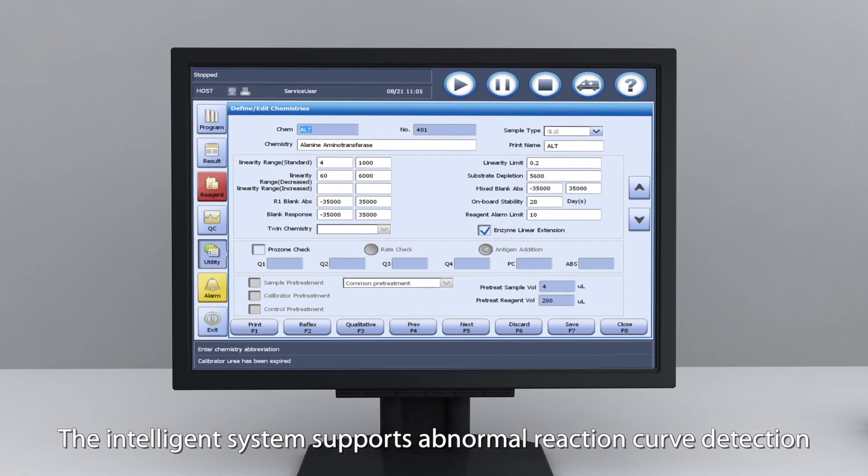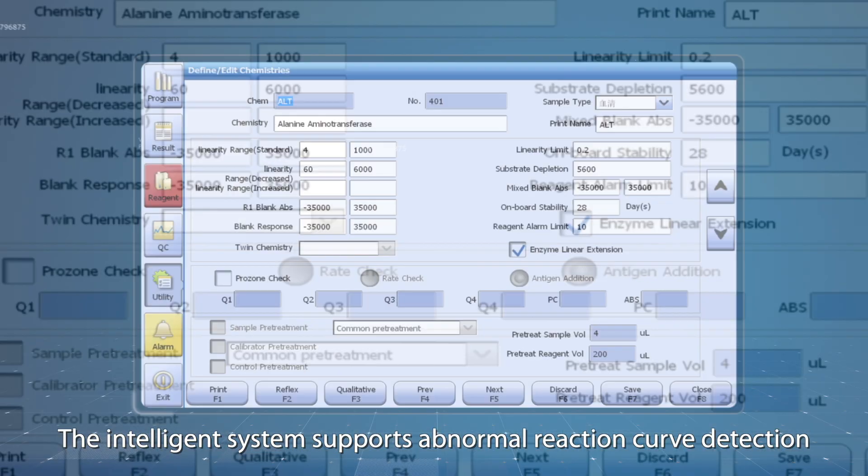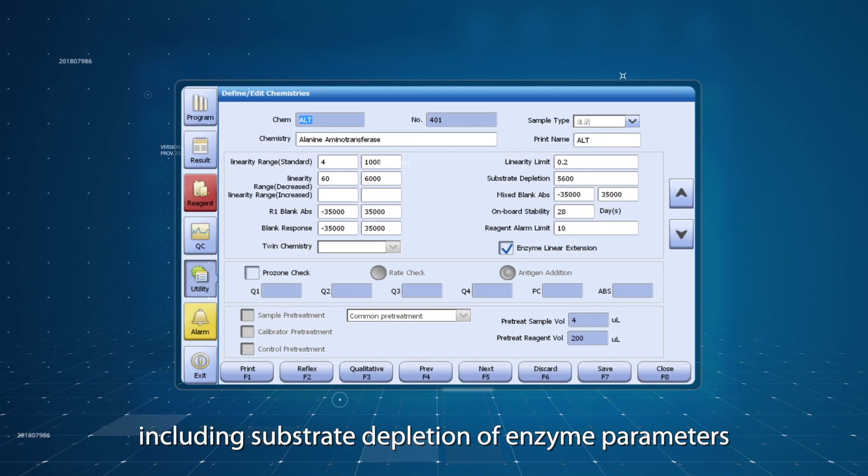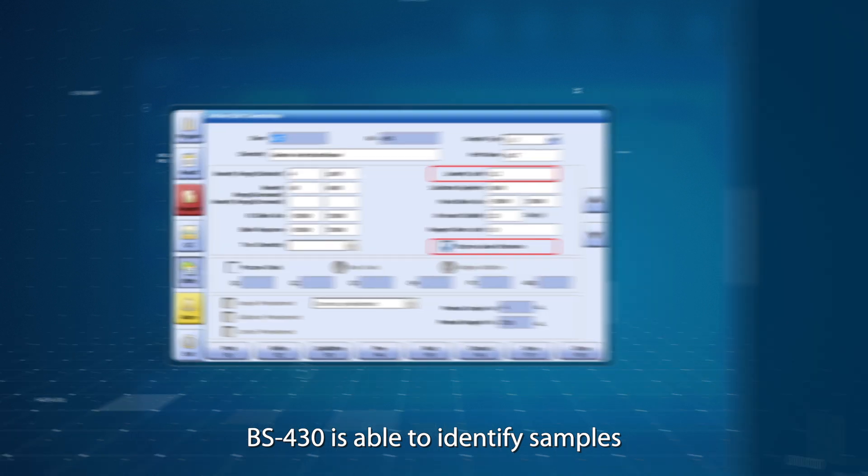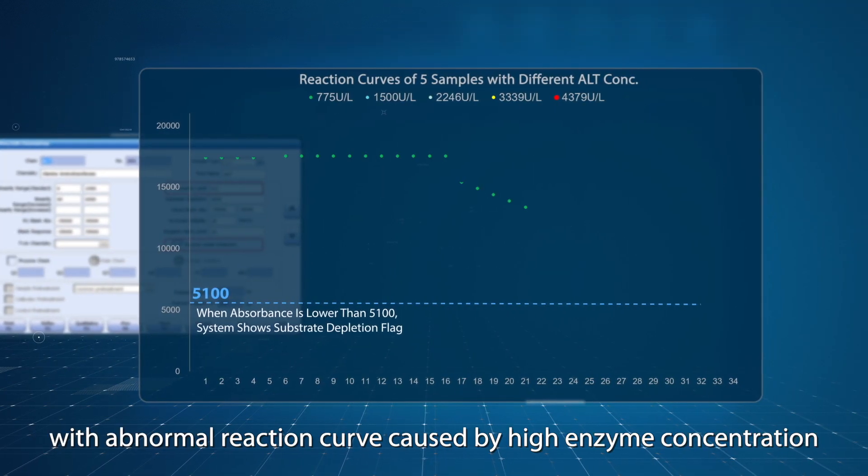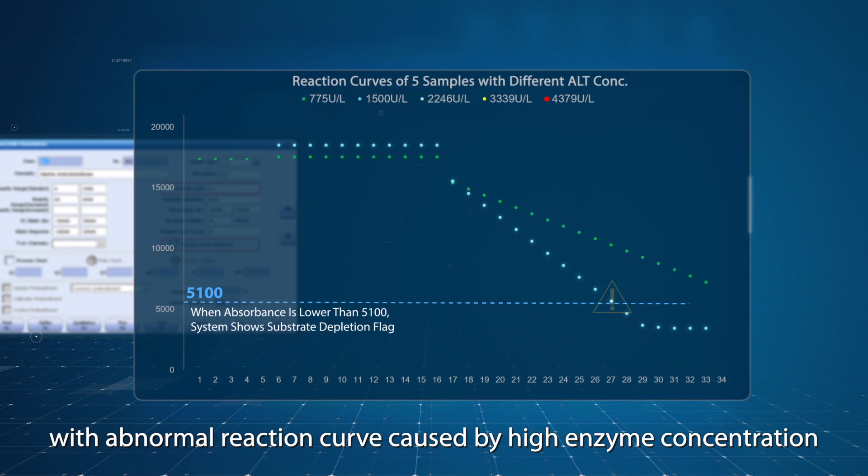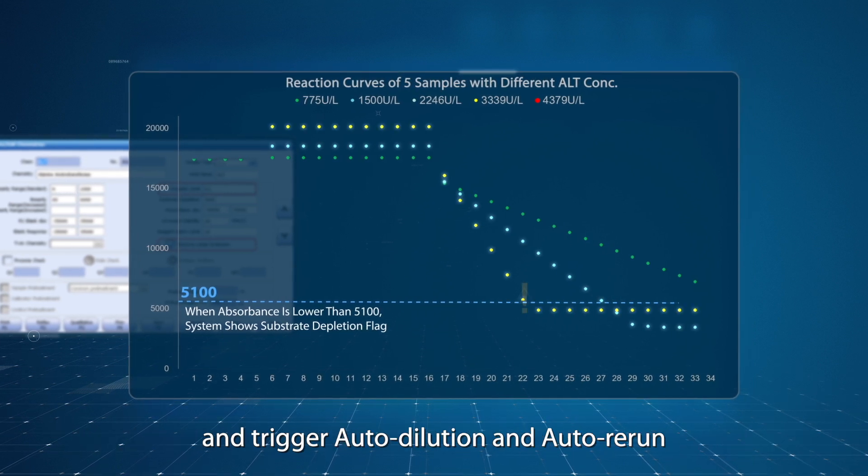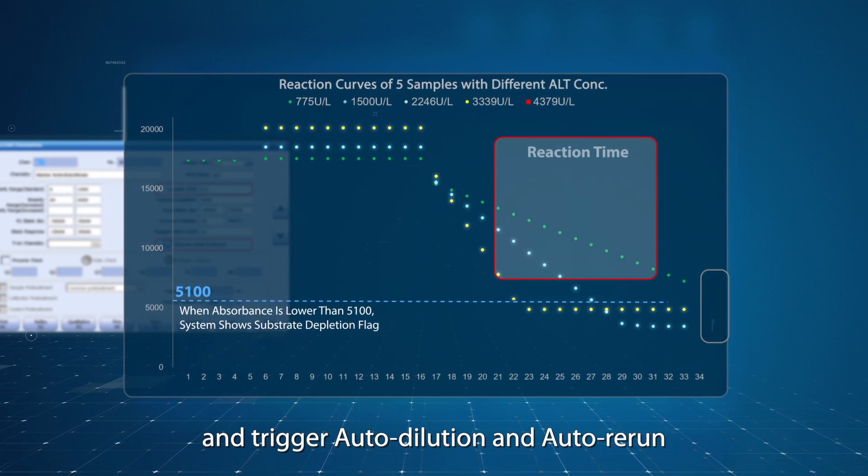The intelligent system supports abnormal reaction curve detection, including substrate depletion of enzyme parameters. BS430 is able to identify samples with abnormal reaction curve caused by high enzyme concentration and trigger auto-dilution and auto-rerun.